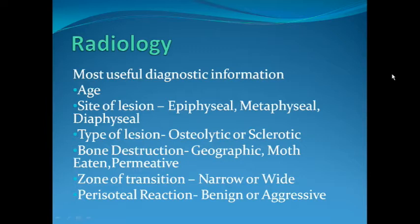We also need to note whether the lesion is osteolytic or sclerotic. An osteolytic lesion is one in which bone destruction is visible within the confines of the tumour on X-ray. Most bone tumours present as osteolytic lesions. Very rarely we find a sclerotic or osteoblastic lesion where new bone formation has taken place, making the area of the tumour appear more radio-dense.